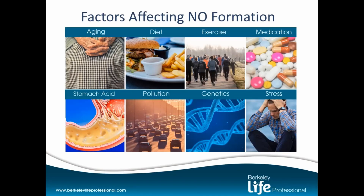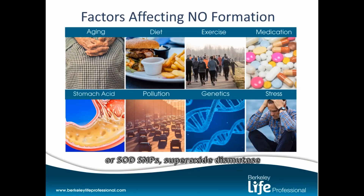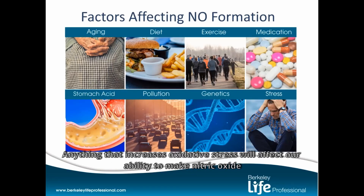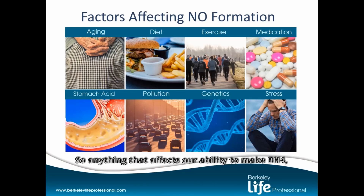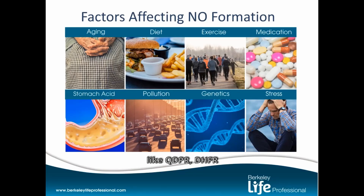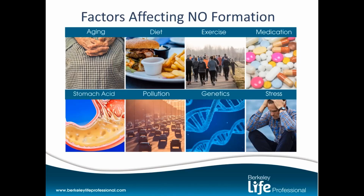Genetics also plays a role. NOS SNPs, SOD SNPs — superoxide dismutase — and anything that increases oxidative stress will affect our ability to make nitric oxide. Factors affecting our ability to make BH4, such as QDPR, DHFR, and even MTHFR genetic SNPs, will decrease our ability to make nitric oxide.